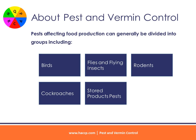Pests affecting food production can generally be divided into groups including: birds, flies and flying insects, rodents, cockroaches and crawling insects, and stored products pests.